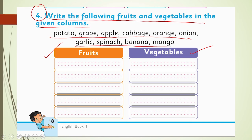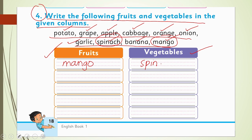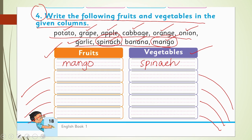List mein hain: potato (aloo), grape (angoor), apple, cabbage (gobhi), orange (malta), onion (piaz), garlic (lehsan), spinach (saag), banana (kela), mango. Is mein se mera favorite fruit hai mango — yeh phal hai to is ko main fruit mein likhuungi. Aur is list mein meri favorite vegetable hai spinach (saag). Baqi fruits aur vegetables ko padh ke aap ne inko spaces mein four-line ki madad se likhna hai — yeh aap ka homework hai.